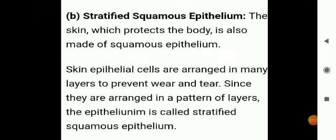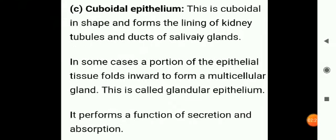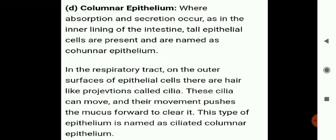Next is cuboidal epithelium. It is made up of cuboidal cells which are more or less square-shaped. In surface view they look polygonal in shape. The nuclei are round in shape and lie in the center of the cells. It is present in the kidney tubules, sweat glands, and salivary glands. It performs functions of secretion and absorption.